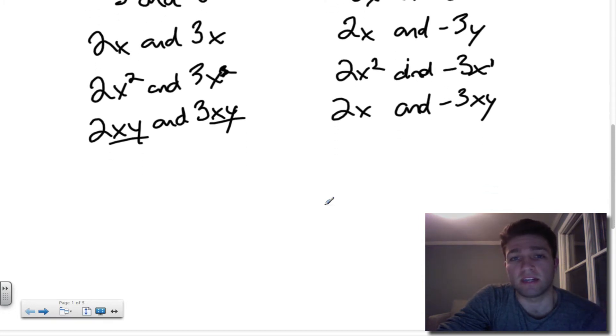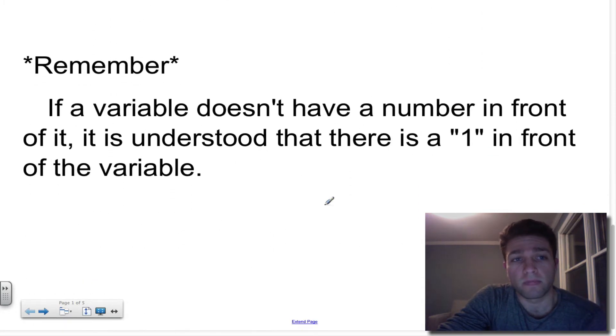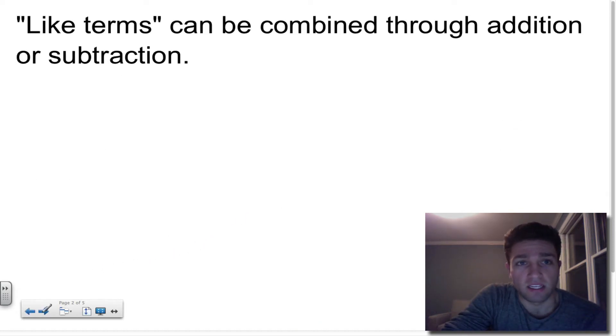There's one other thing I'd like you to just keep in mind, which I know that many of us know, but just as a reminder, if a variable doesn't have a number in front of it, we understand in math that it really has a 1 in front of it. So if I had x, it would be 1x. If I have y, it would be 1y. That's the same for any variable that has no number in front of it. It really has a 1. And that's something you need to remember when you're combining like terms.